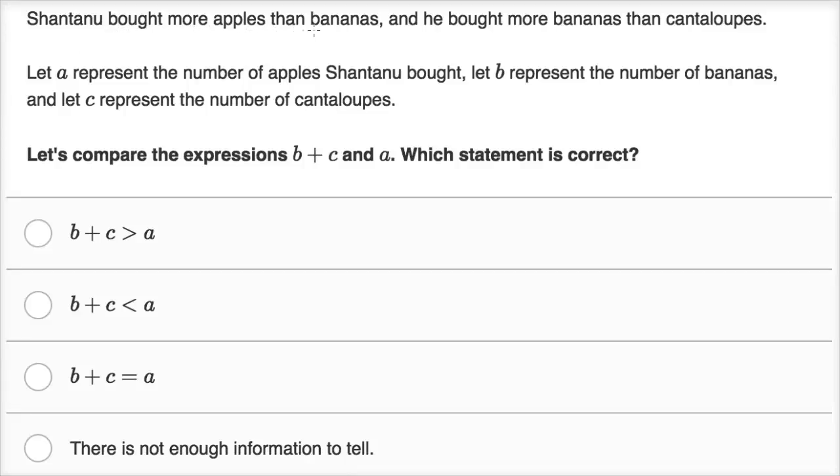Shantanu bought more apples than bananas, and he bought more bananas than cantaloupes. Let A represent the number of apples Shantanu bought, let B represent the number of bananas, and let C represent the number of cantaloupes. Let's compare the expressions B plus C and A. Which statement is correct?